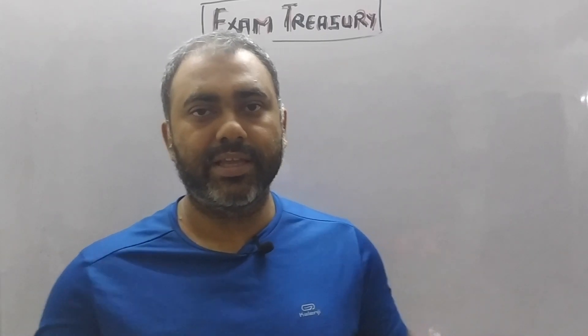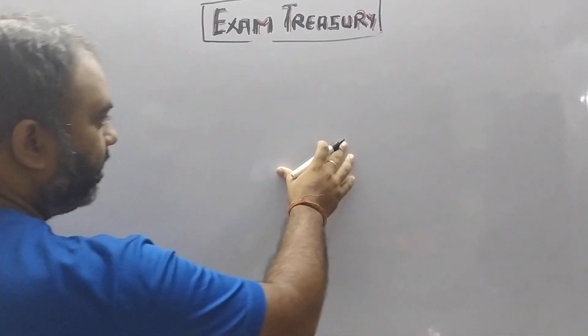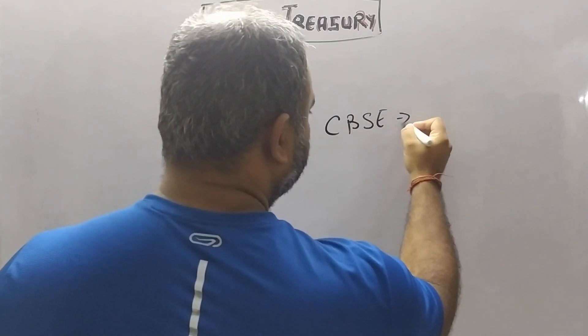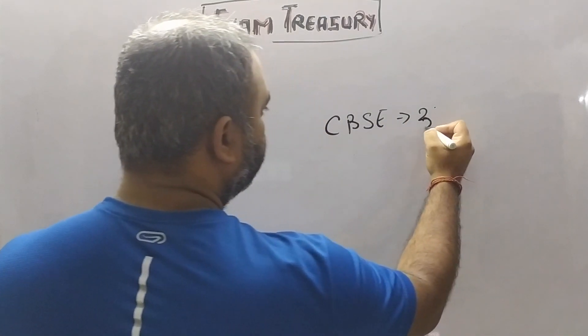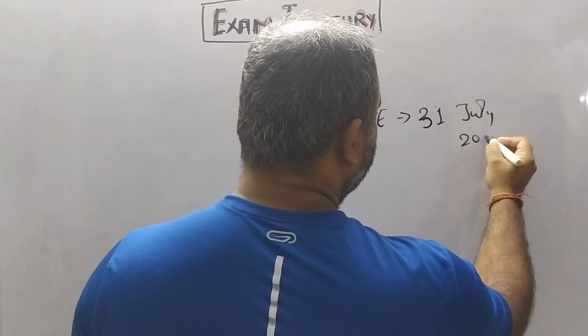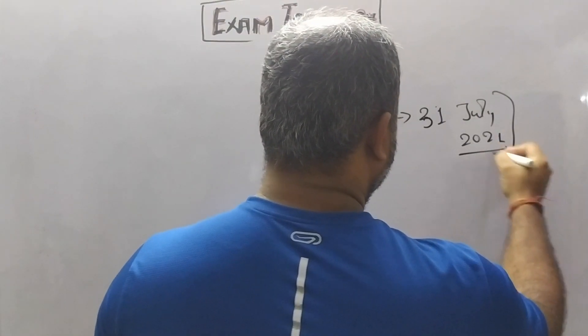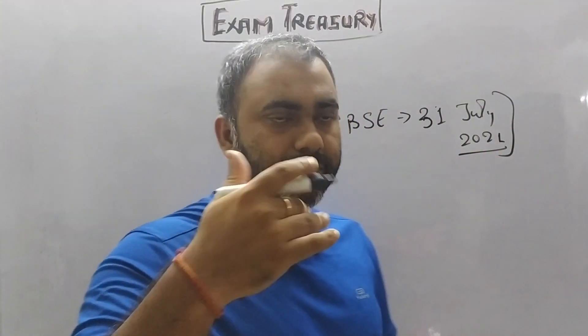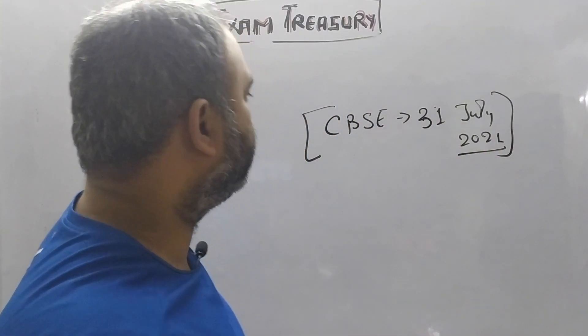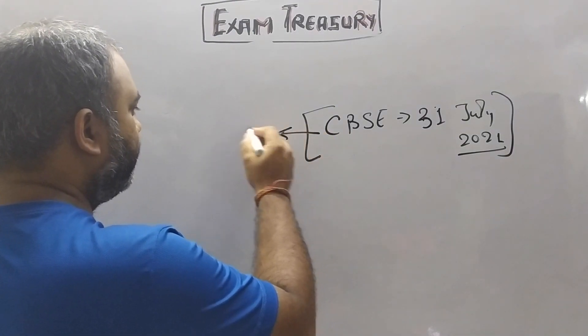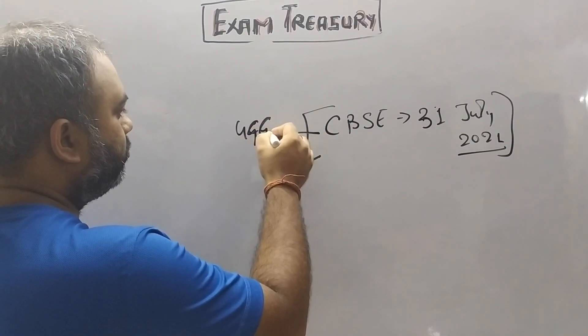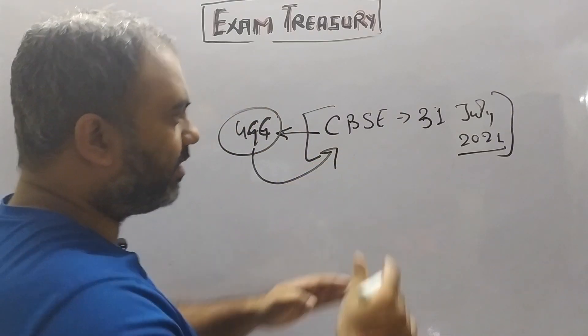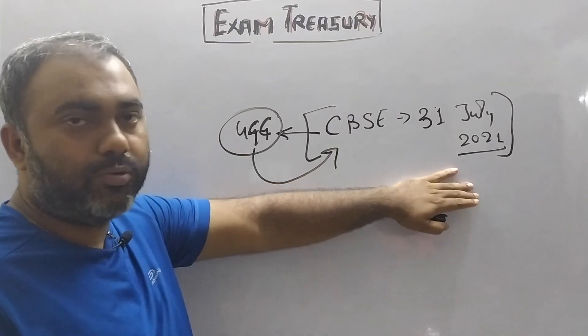Today we are going to discuss the latest UGC guidelines. As you know, the Supreme Court directed that CBSE has to declare its results on 31 July 2021. After that, UGC said that once the date of CBSE has been finalized, they will release their guidelines.